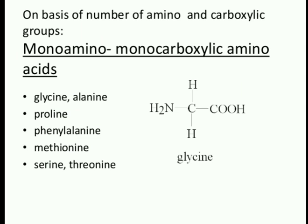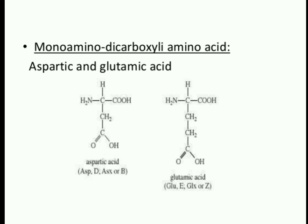Classification of amino acids on the basis of number of amino and carboxyl groups: mono-amino mono-carboxylic amino acids have one amino group and one carboxyl group — examples are glycine, alanine, proline, phenylalanine, methionine, serine, and threonine, each containing a single NH2 group and single COOH group.